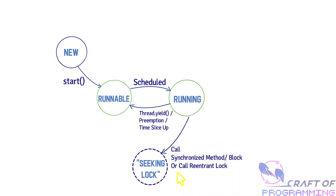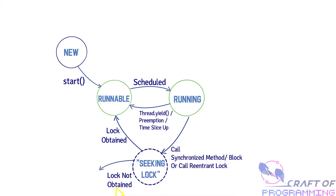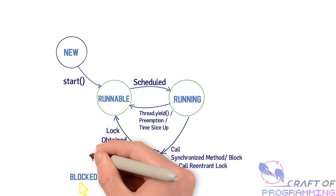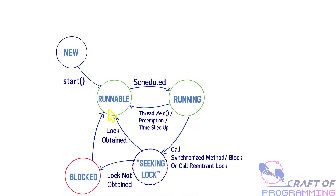In Java, when a call to a synchronized method or a synchronized block occurs, two things may happen: the thread may acquire that lock, in which case it goes to the runnable state and then gets scheduled to the running state to execute the locked code. Or if the lock is already held by another thread, then the seeking lock will move the thread from the running state onto the blocked state, where the thread will be blocked on the monitor's waiting set, waiting to acquire the lock.